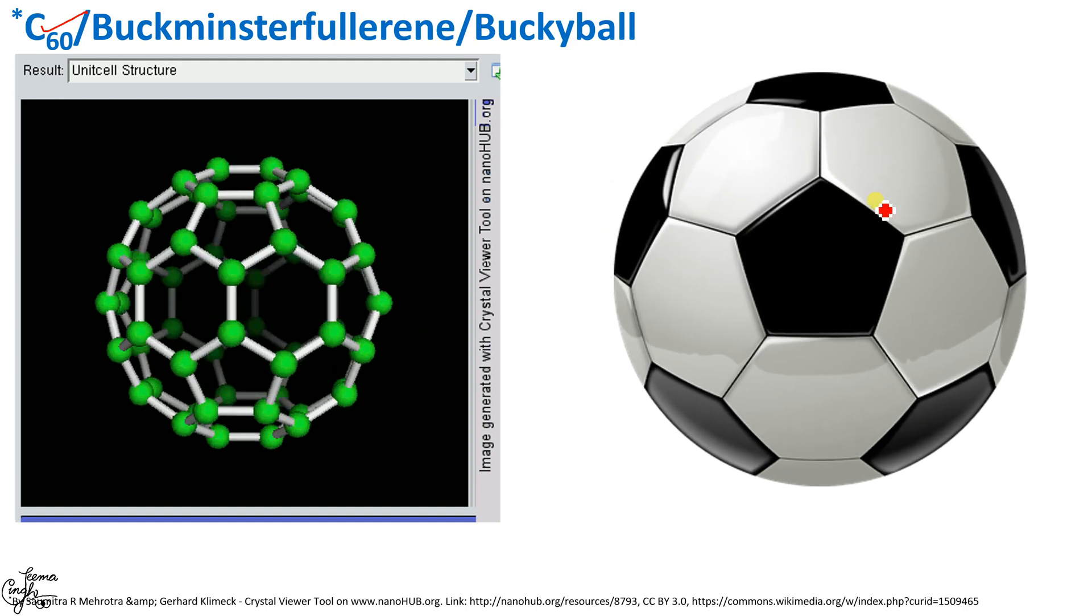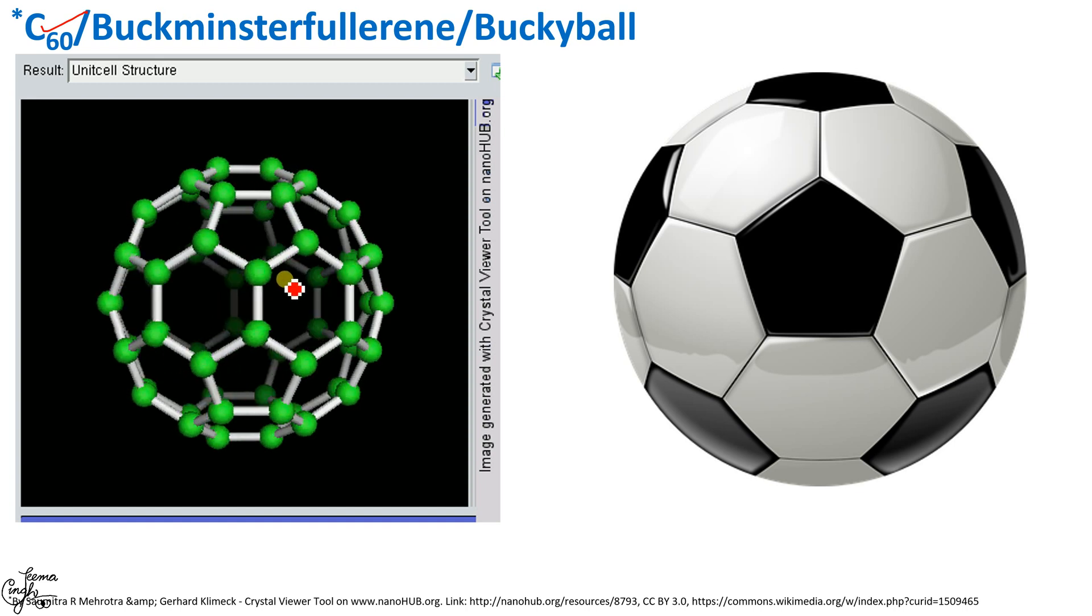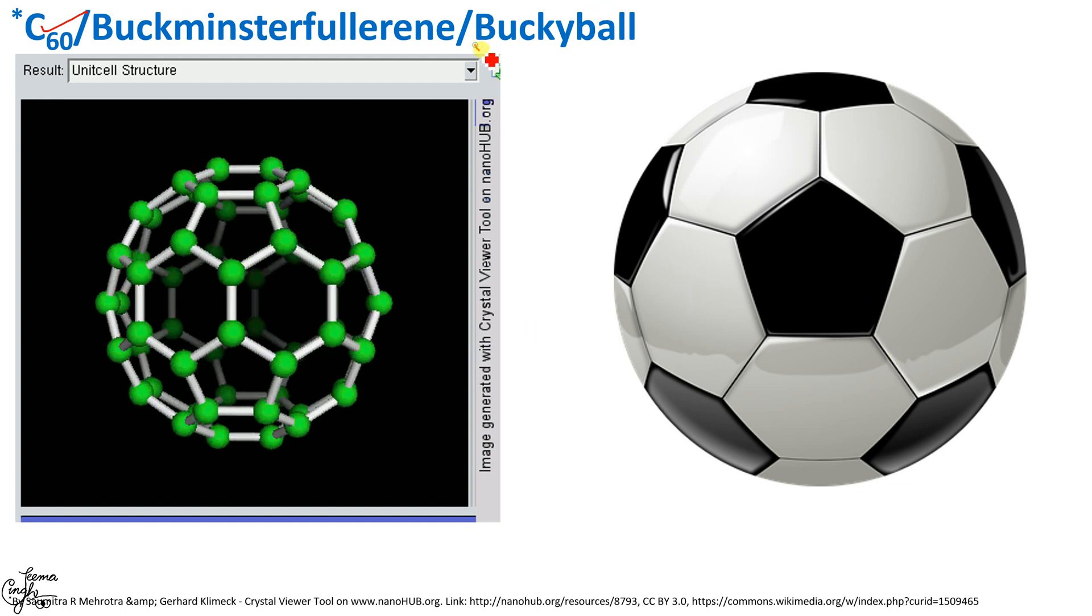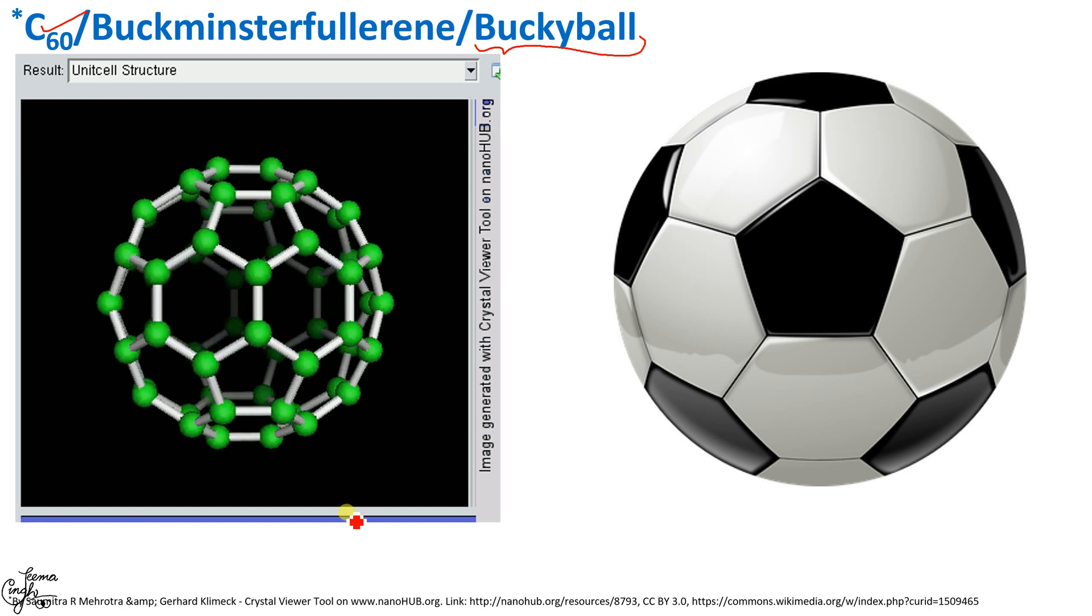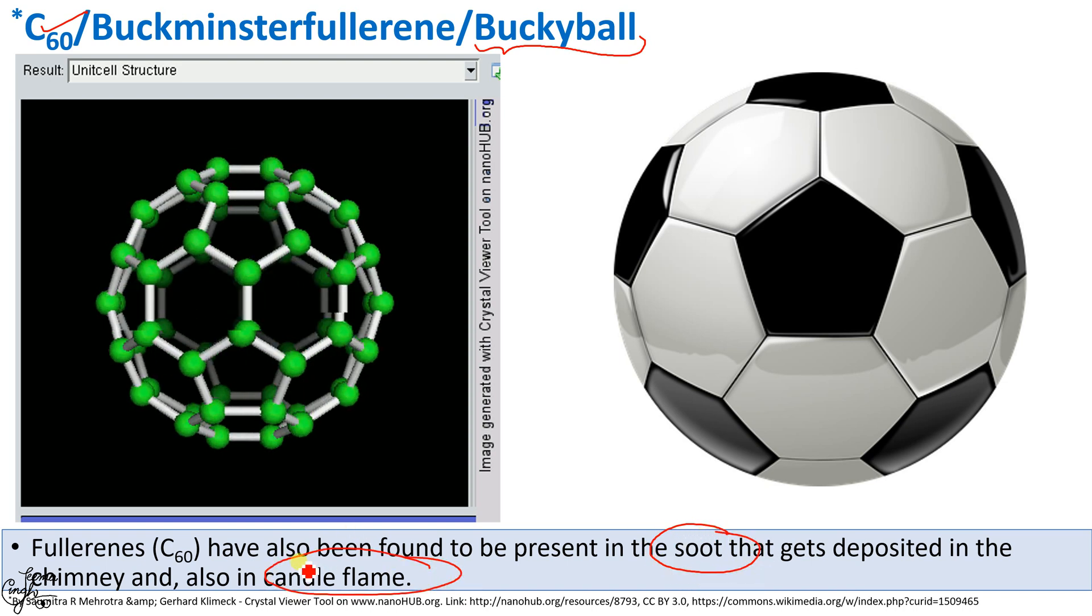You might be surprised to know that fullerenes are found in the chimney soot and the candle flame. You will be studying more about fullerenes, diamond, graphite and other allotropic forms of carbon in your higher classes.